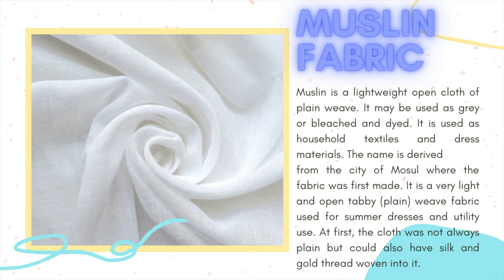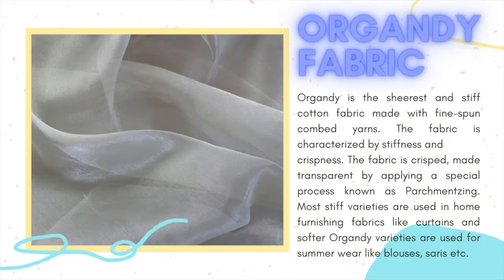In this muslin, the motif weaves in and out of the cloth as if it has been embroidered. In the madras net, the motif is predominantly woven on the surface. Organdy fabric. Organdy is the sheerest and stiffest cotton fabric made with fine spun combed yarns. The fabric is characterized by stiffness and crispness, made transparent by applying a special process known as parchmentizing. Stiffer varieties are used in home furnishing fabrics, while softer organdy varieties are used for summer wear like blouses, sarees, etc.